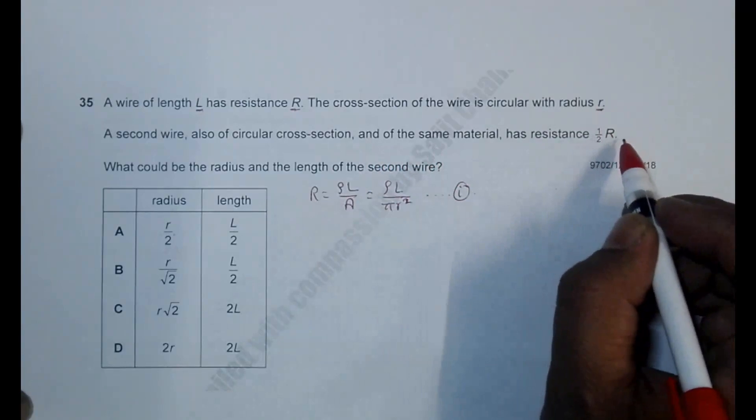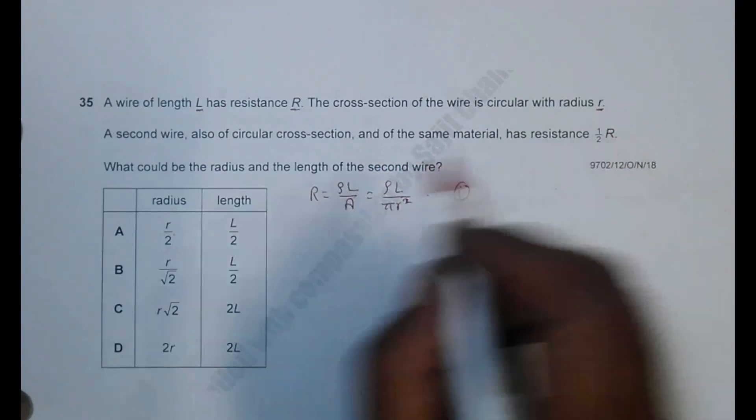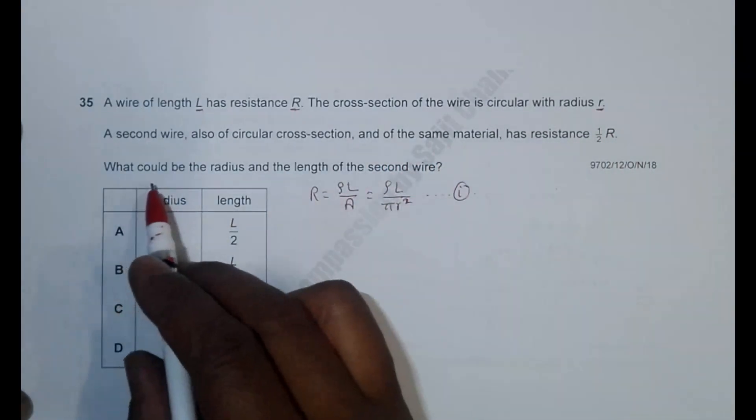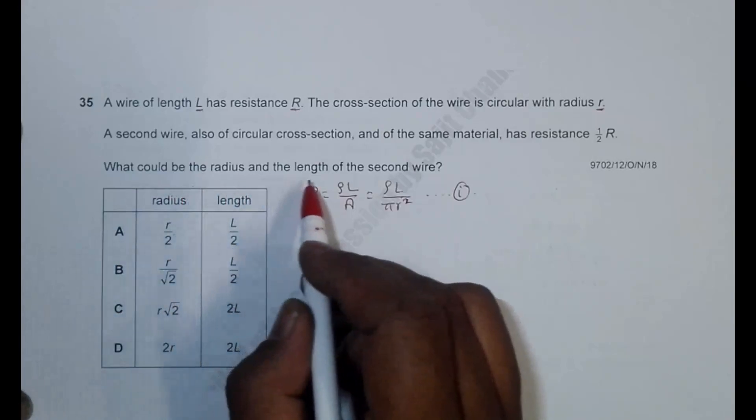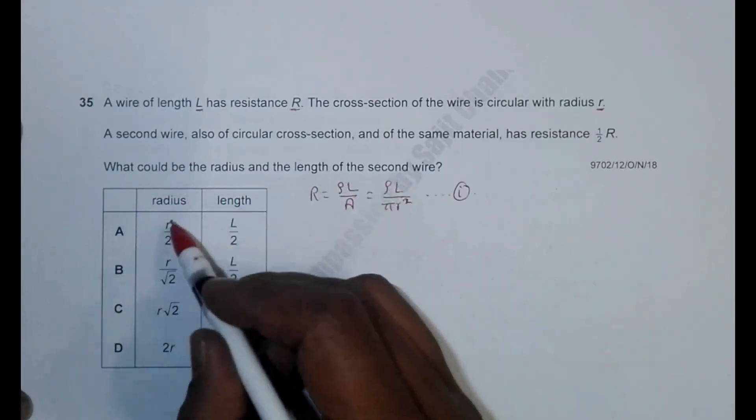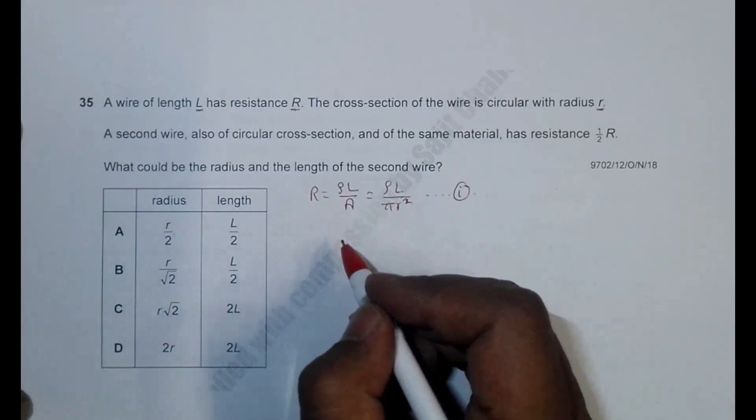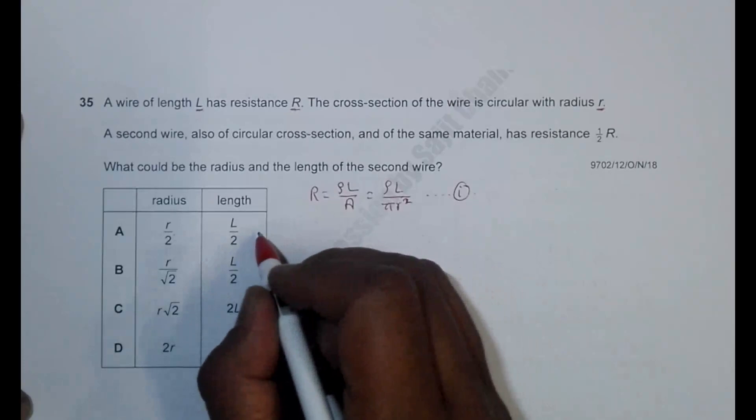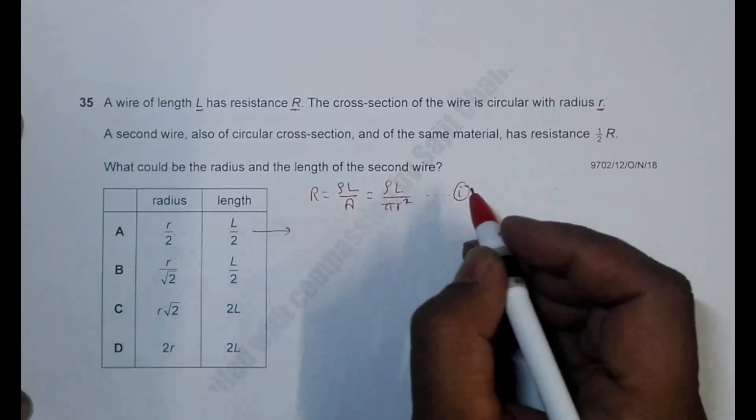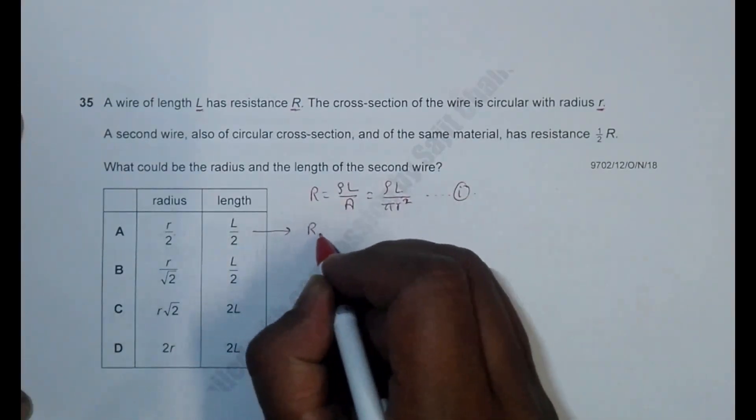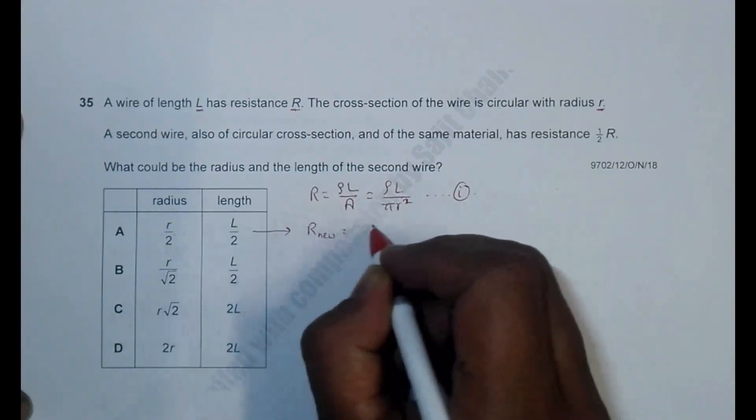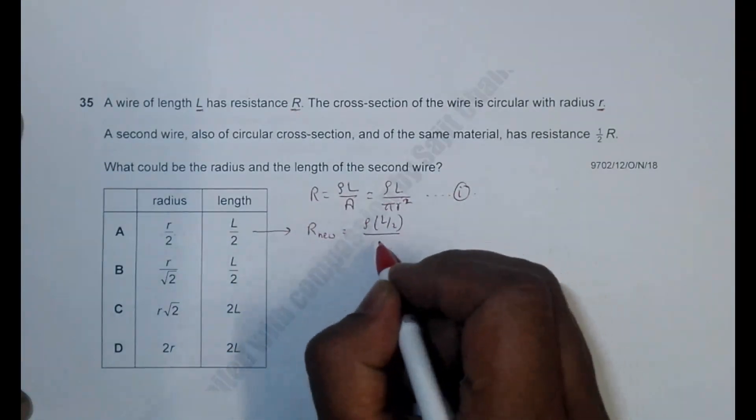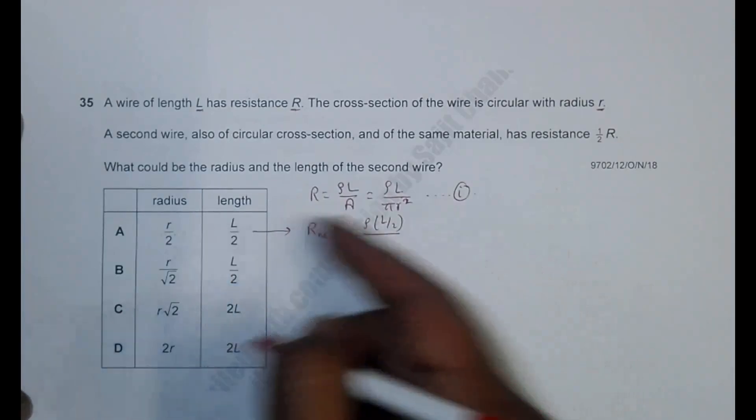So the new resistance is 1/2 R. We have to find what could be the radius and the length of the second wire. From these choices we have to select the radius as well as the length of the second wire. So if I consider this the first case, I will have the resistance R_new.